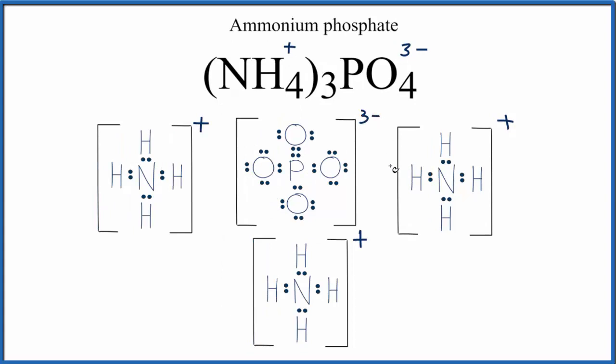And this would be the Lewis structure for NH4 three PO4 ammonium phosphate. If you're not sure how to do the actual Lewis structures for NH4 plus or the PO4 three minus, check the description in this video. There'll be links to videos on writing those individual Lewis structures. So that's it, the Lewis structure for ammonium phosphate.